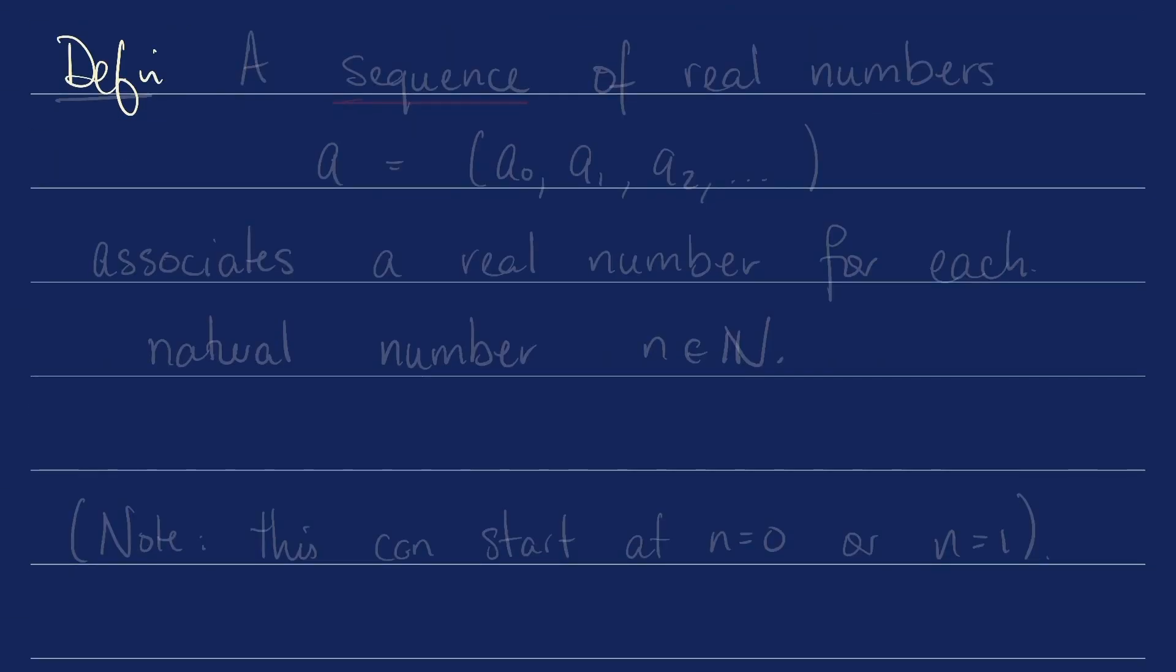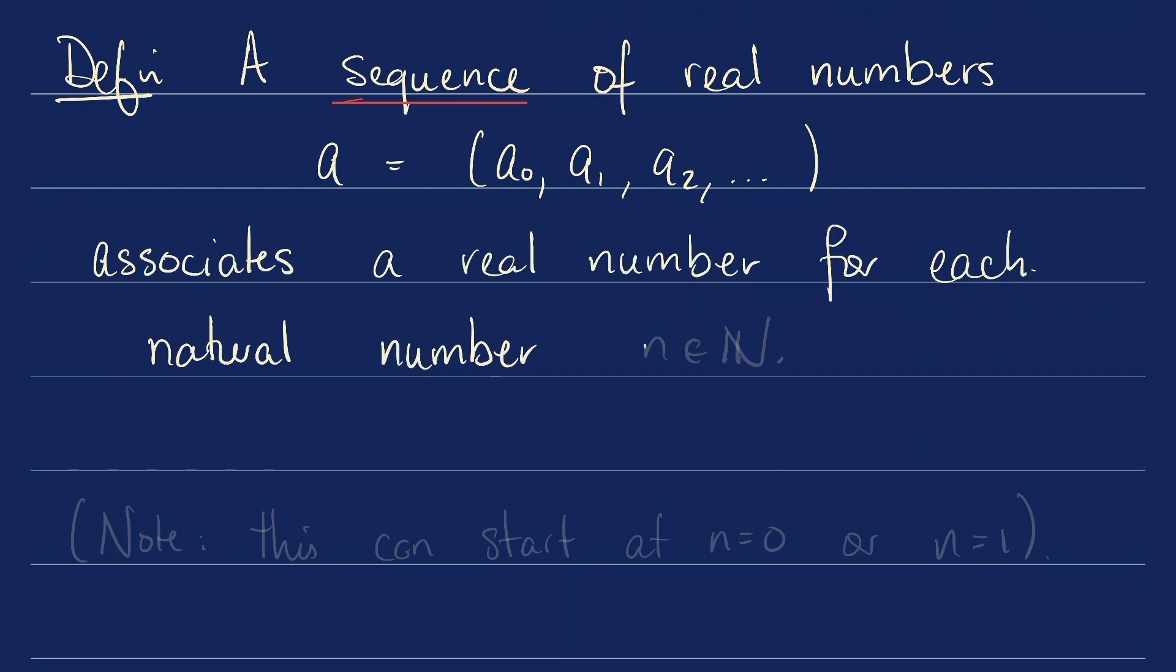Definition. A sequence of real numbers a = (a0, a1, a2, etc.) associates a real number for each natural number, little n,